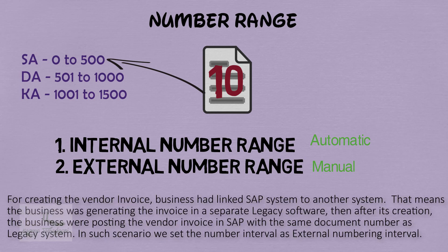Here is an example of when external numbering is used. In one implementation I worked on, the business was generating vendor invoices in a separate legacy system and then posting them in SAP with the same document number as the legacy system. In such a scenario, we set the number interval as an external numbering interval.